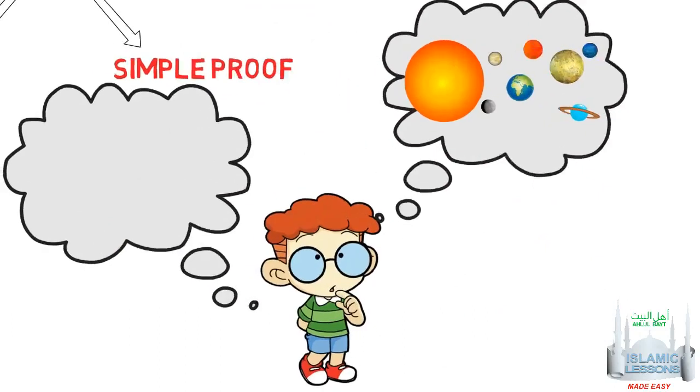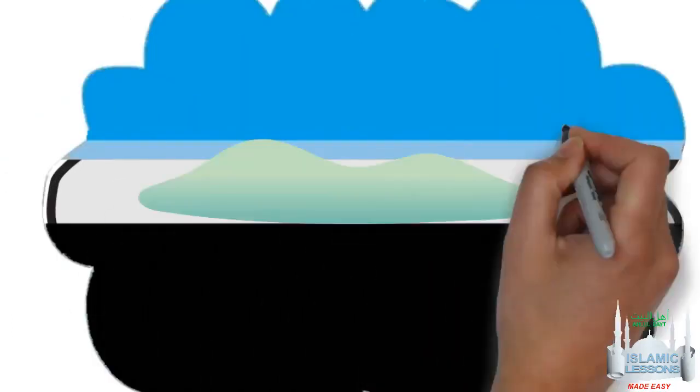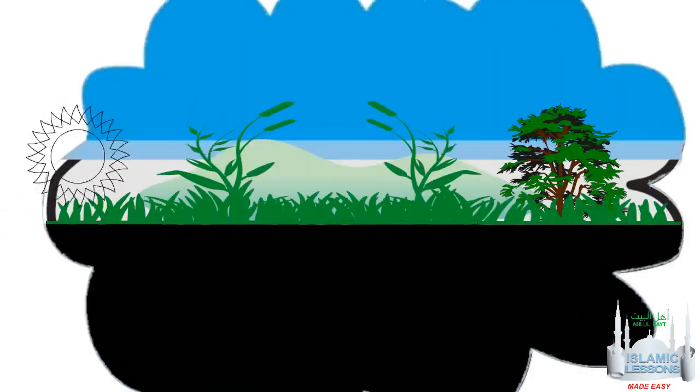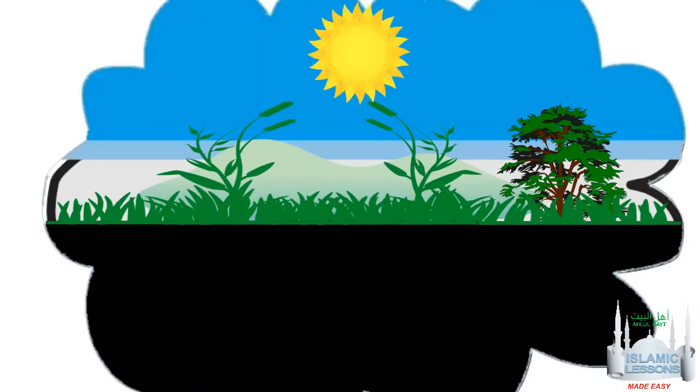Another example is that of the gradual change of day and night. At dawn, light gradually pierces the curtains of darkness, and at night, light slowly leaves to give us darkness.